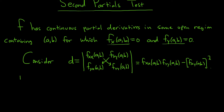Then you have the following cases. Case one: if little d is greater than zero and f_xx at (a,b) is positive, then you have a minimum at (a,b). This is reminiscent of the second derivative test from calculus — if the second derivative is positive, you have a min.